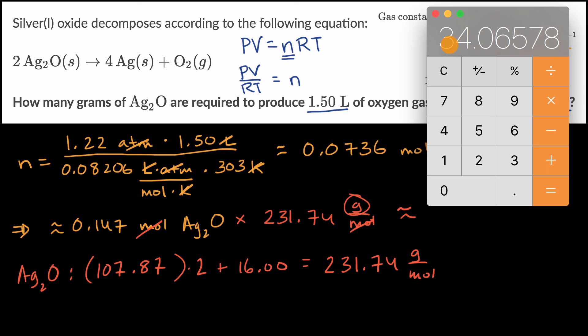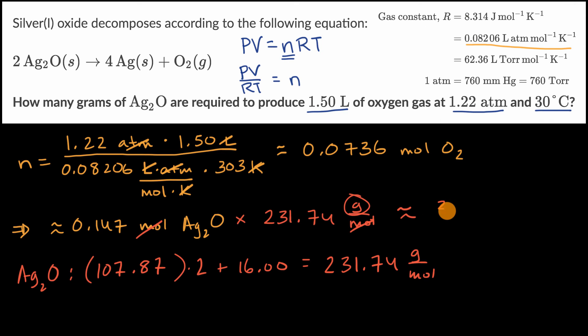Multiply to get, with three significant figures, 34.1 grams. Approximately 34.1 grams of silver oxide is required to produce this much oxygen.